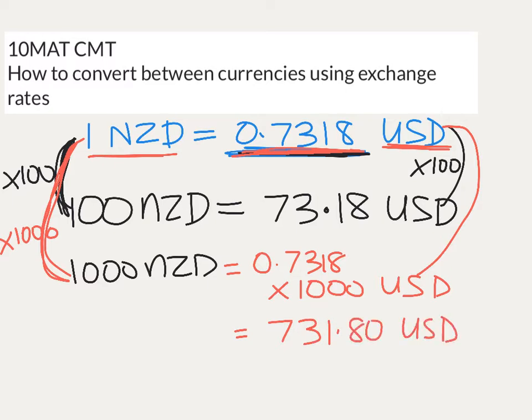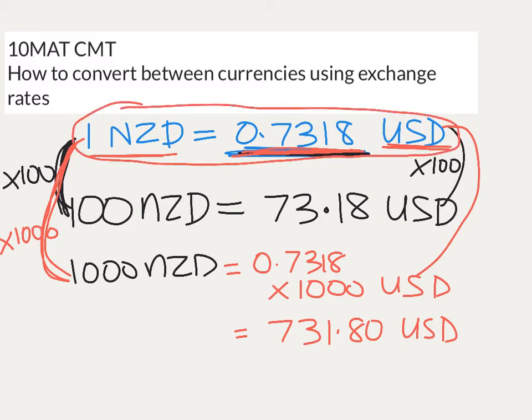Now, you probably realise that it's not actually that simple — banks want to make money when you swap your money from one currency to another, so they're going to charge you a little bit for the privilege of doing the conversion. But because we're working with a simplified maths problem, we're not going to worry about those charges. That's the first example: New Zealand dollar to US dollar. We're going to move on and get into some problems in different currencies.